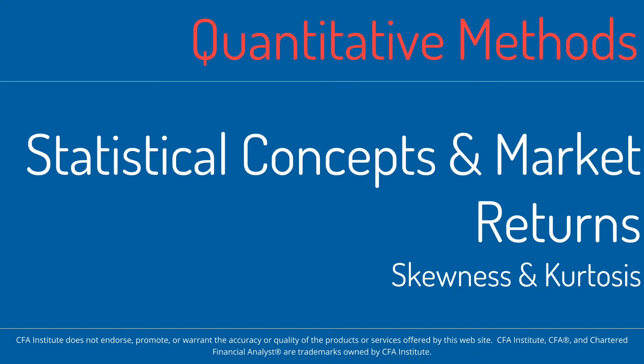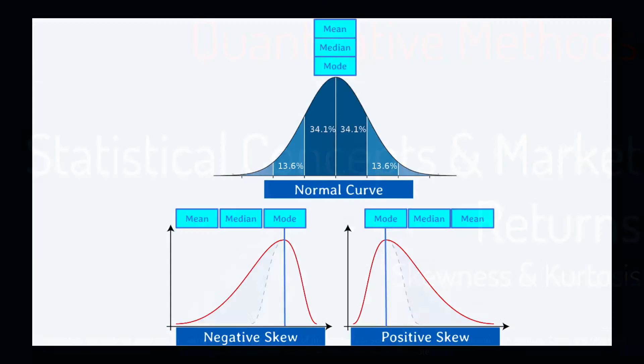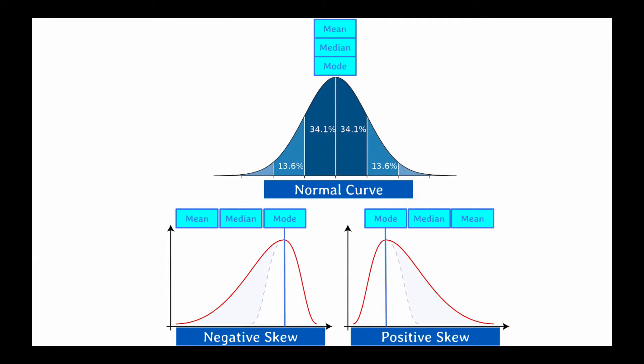Hello and welcome back. Today I have two problems in the area of statistical concepts and market returns. Both of these questions examine the attributes of skewness and kurtosis in unimodal distributions, so let's get started.